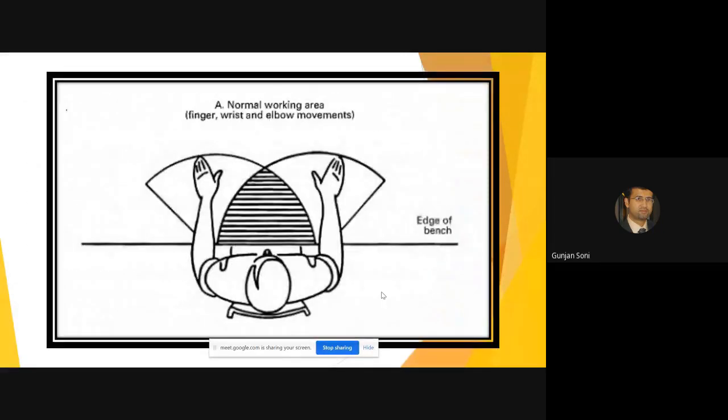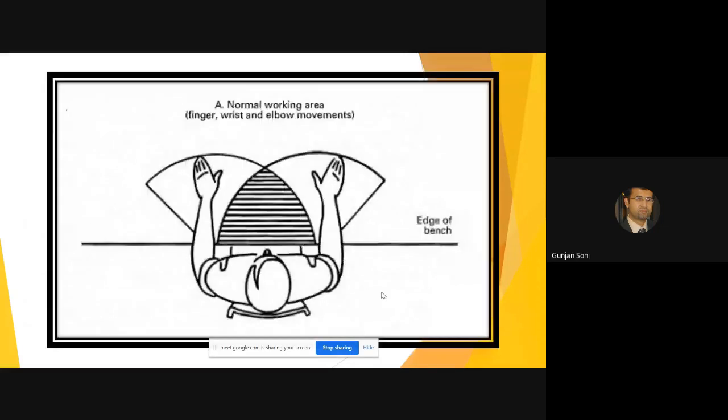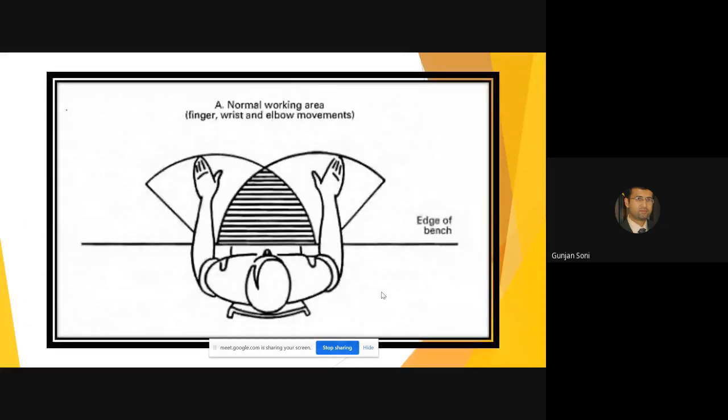It was talking about normal working area. If you're working on a bench or a table, this is generally a comfortable working area for the two hands. Finger rest and how it should be the movement.